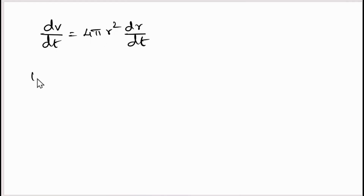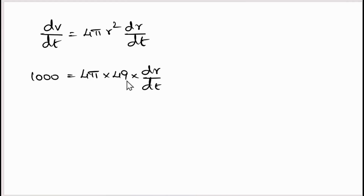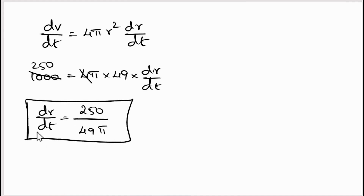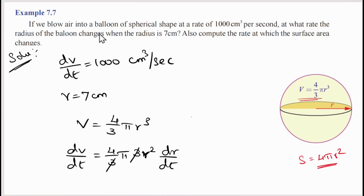Substituting the values: 1000 = 4π · (7)² · dr/dt, which gives 1000 = 4π · 49 · dr/dt. So dr/dt = 1000 / (4π · 49) = 250 / (49π) cm per second. This is the answer to the first question.